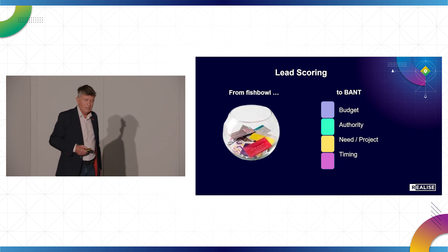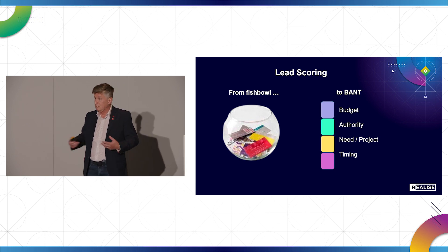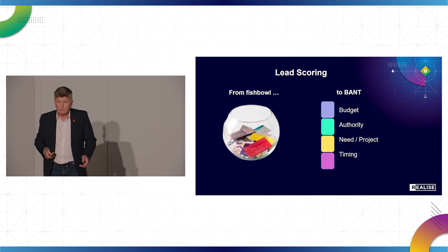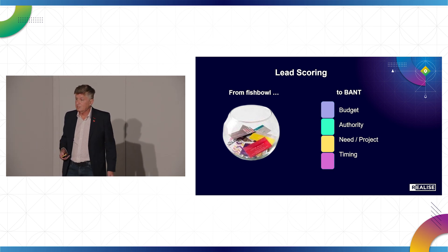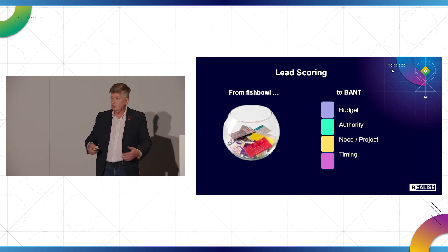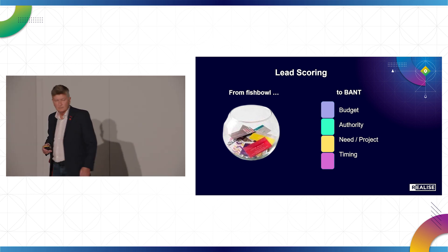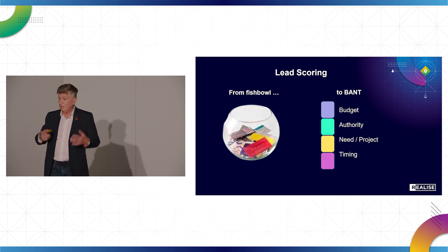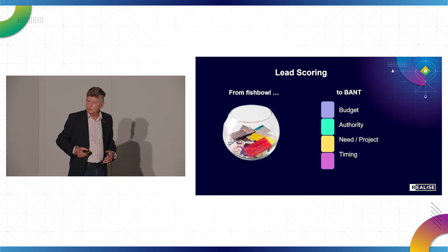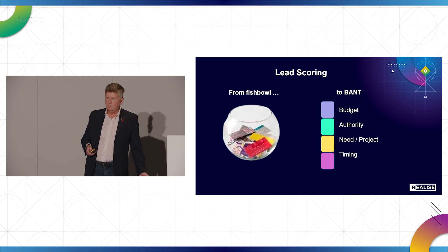What we did was create what we called BANT — a way to categorize a lead so we actually knew if it was worth pursuing. Simple things: does the person have any budget? Do they have the authority to spend that budget, or are they just on a fact-finding mission? Is there actually a project or a need on the horizon? And lastly, timing — is this in the next couple of weeks, or are we talking 2025? Put those four things together and you can start to come up with a lead score.